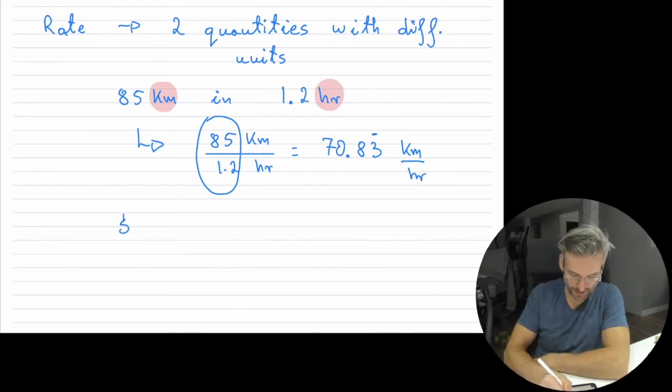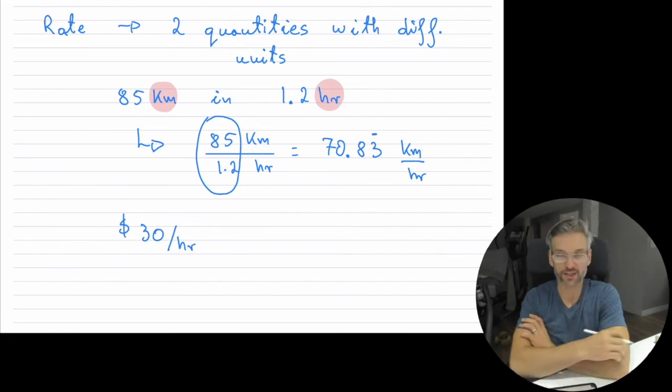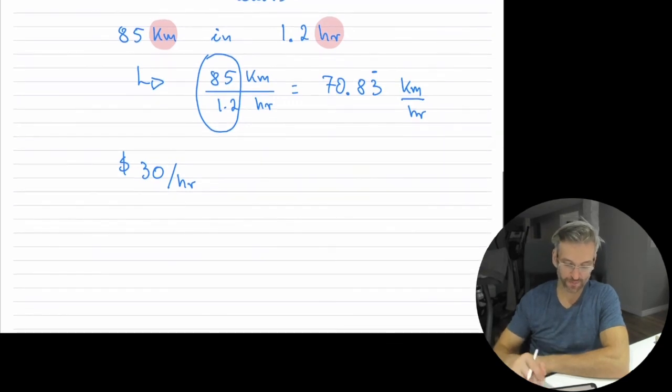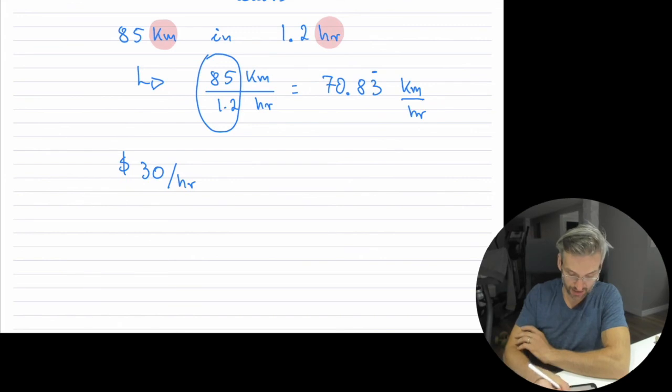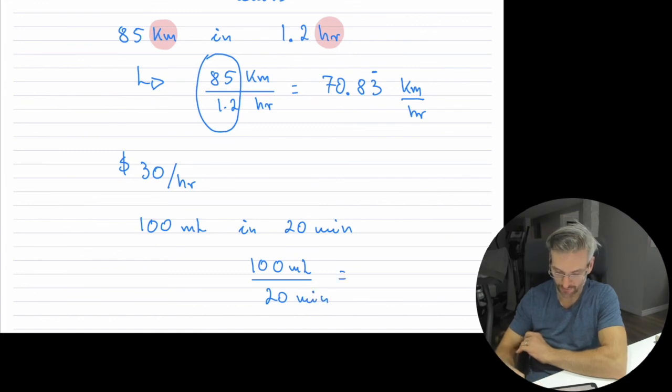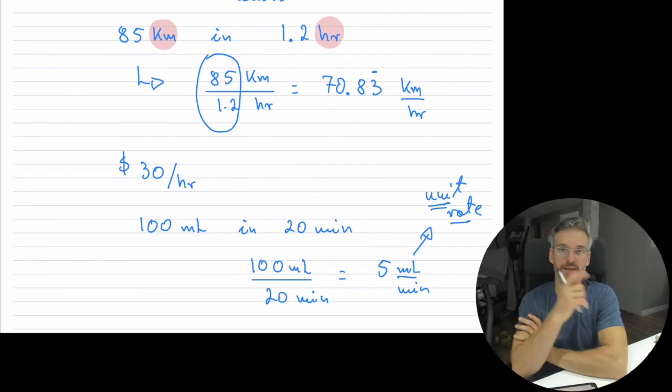And these rates happen quite frequently, where you want to be able to compare different things. So, for example, if you may be making money, $30 per hour, that is considered a unit rate. Because it's per 1 hour, it says $30 in 1 hour. Now, you can also do that maybe with medication. So if you're giving a patient medication, let's say 100 milliliters in 20 minutes. So notice that this is a rate, and you can write it, so 100 milliliters all over 20 minutes. And if you wanted to create a unit rate, you can divide the two, so you're going to get 5 milliliters per minute. And this would be called a unit rate, because the word unit means per 1. So it's 1.